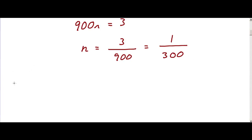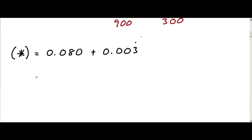Now that we know that this is the case, some value, which equals 0.080 plus 0.003 recurring, is equal to 8 over 100 plus 1 over 300.